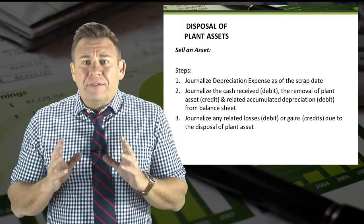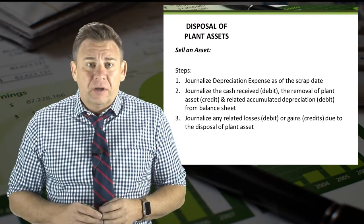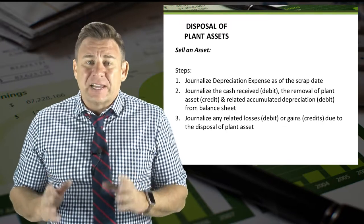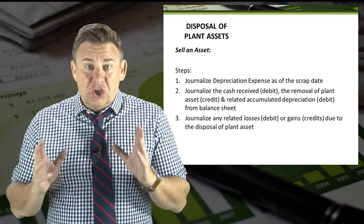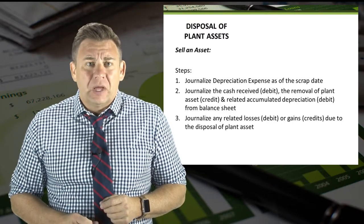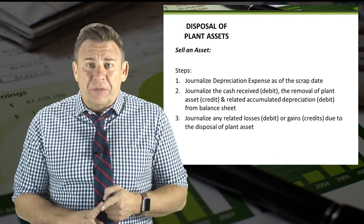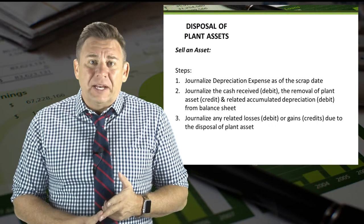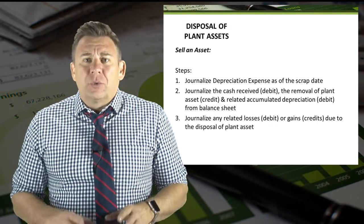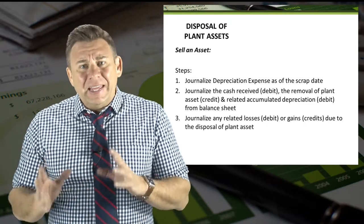When we sell a plant asset, there are a few steps we need to do in order to make the proper journal entry. The first step is to record depreciation expense as of the sale date, since it is unlikely that the accumulated depreciation account already has the correct balance. Next, we need to remove the asset from our balance sheet by zeroing out the plant asset and accumulated depreciation accounts.